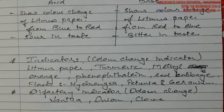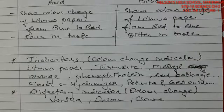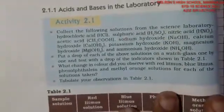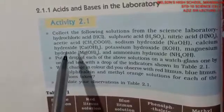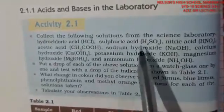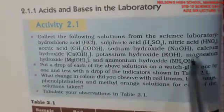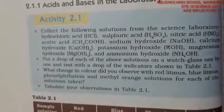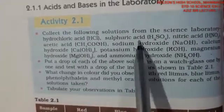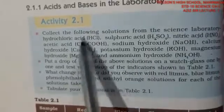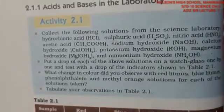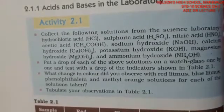In activity 2.1, certain substances are to be classified as acid or base. The substances given are hydrochloric acid, sulfuric acid, nitric acid, acetic acid — these are all acids. Then sodium hydroxide, calcium hydroxide, potassium hydroxide, magnesium hydroxide, and ammonium hydroxide are listed. All the hydroxides are basic by their nature.